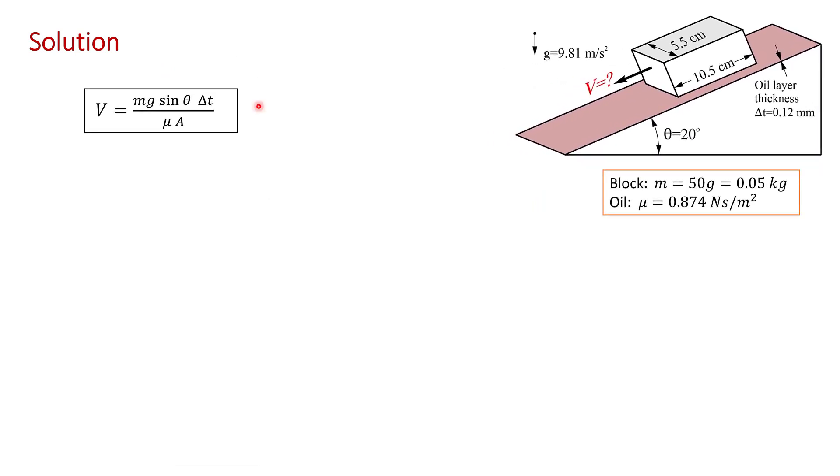I've simply rewritten this final equation, and I've also added over here a couple of other parameters from the problem statement as a reminder. You're told that the block has a mass of 50 grams, so 0.05 kilograms, and you're given the dynamic viscosity of the oil is 0.874 pascal seconds. So we can start making the substitutions. So mass is 0.05 kilograms. g is 9.8 meters per second squared. The angle of the inclined plane is 20 degrees.